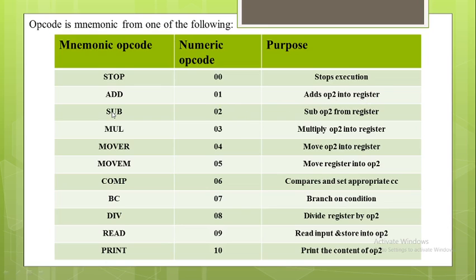The next opcode is SUB, whose purpose is to subtract operand 2 from the register. The next mnemonic opcode is multiplication, corresponding to numeric opcode 03, which multiplies operand 2 into register 1.